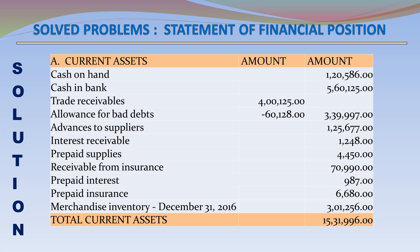Current Assets: Cash on Hand – 120,586; Cash in Bank – 560,125; Trade Receivables – 400,125; Less Allowance for Bad Debts – 60,128; Net Trade Receivables – 339,997; Advances to Suppliers – 125,677; Interest Receivable – 1,248; Prepaid Supplies – 4,450; Receivable from Insurance – 70,990; Prepaid Interest – 987; Prepaid Insurance – 6,680; Merchandise Inventory December 31, 2016 – 301,256. Total Current Assets – 1,531,996.